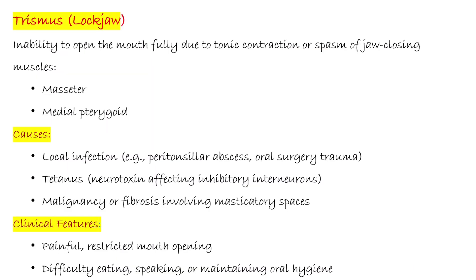Trismus, also called lock jaw, is the inability to open the mouth fully due to tonic contraction or spasm of the jaw-closing muscles — that is, the masseter and medial pterygoid muscles. Causes include local infection, peritonsillar abscess, oral surgery or trauma, tetanus, and malignancy or fibrosis involving the masticatory spaces. Clinical features of trismus include painful and restricted mouth opening, and difficulty in eating, speaking, or maintaining oral hygiene.